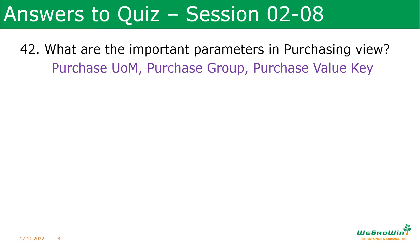In the purchasing view we have the purchasing unit of measure — there is a basic unit of measure and purchasing can have a different unit of measure. The purchasing group is maintained, and also the purchasing value key, where we define the over-delivery tolerance, under-delivery tolerance, reminders, and similar parameters.